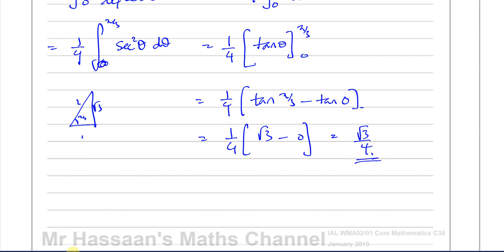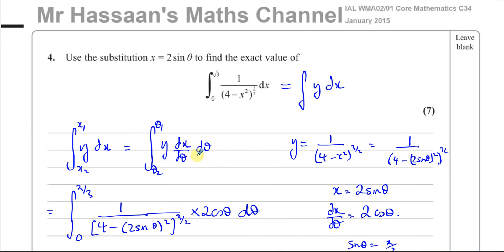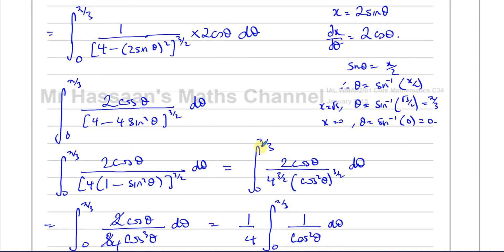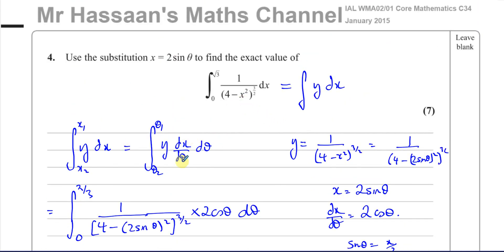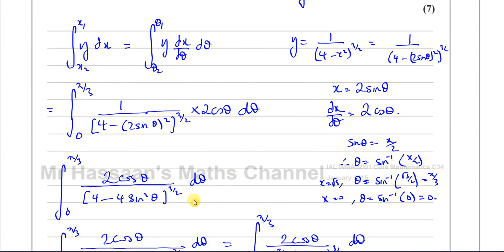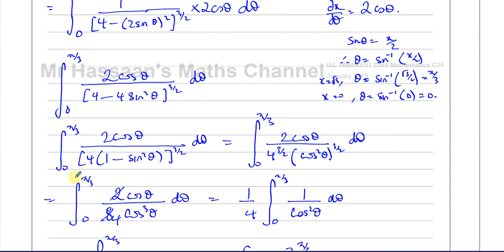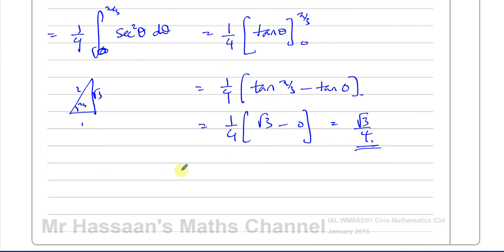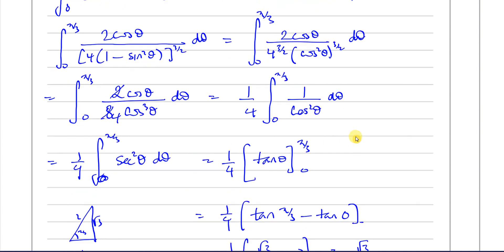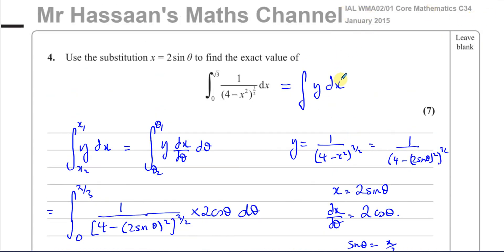And there's the answer to question 4 from the January 2015 paper. This kind of problem really needs to be known well. To integrate this, you need: one, the techniques of integration by substitution; two, knowledge of trig identities and how to manipulate them to get something integrable; and three, your standard results. Other questions from this paper and from the P4 integration by substitution topic can be found in the playlists shown on screen. Thank you for watching and see you soon.